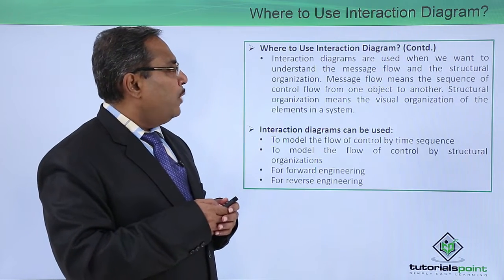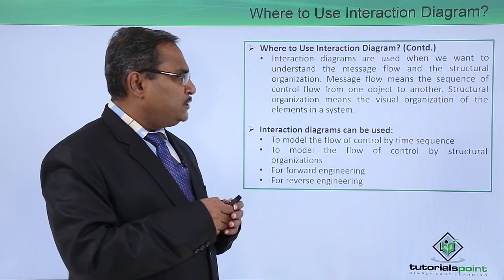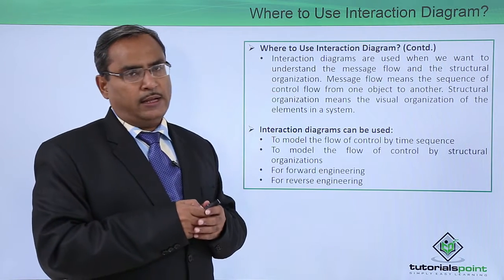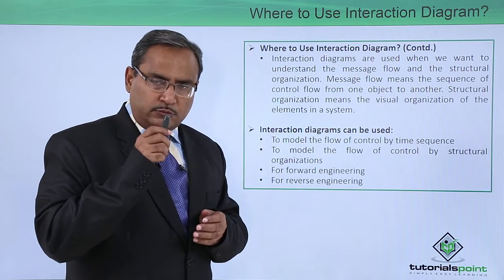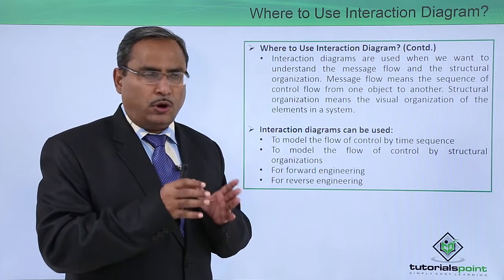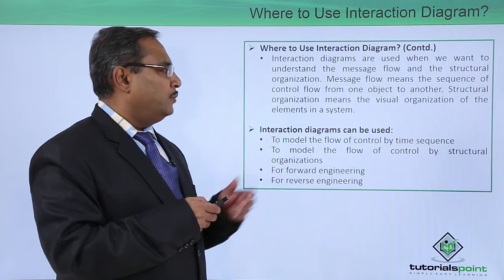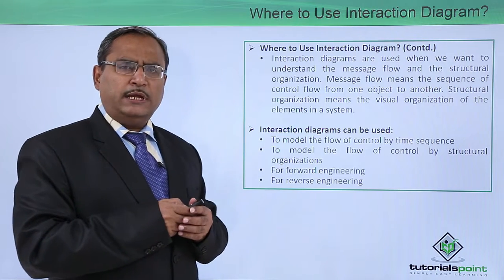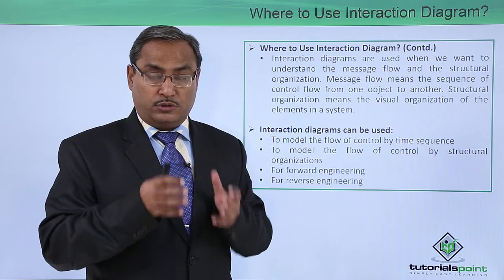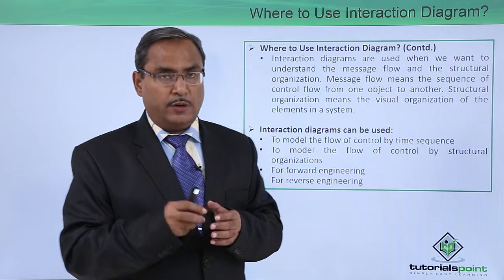Interaction diagrams are used when we want to understand the message flow and the structural organization. Message flow means the sequence of control flow from one object to another object. Messages are nothing but the methods to be called. Structural organization means the visual organization of the elements in a system. Whenever something is dynamic, it is more easy to understand, and that's why interaction diagrams are one of the very important diagrams in UML.